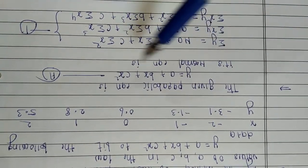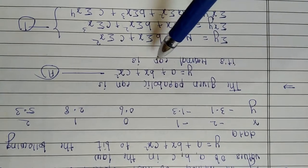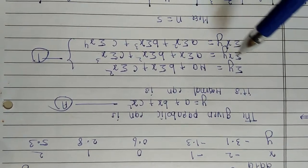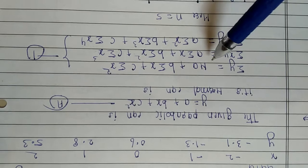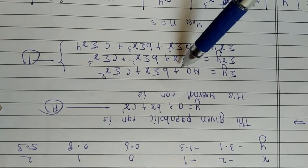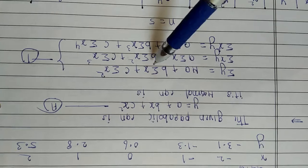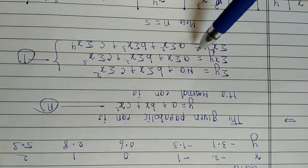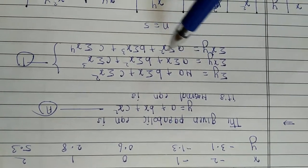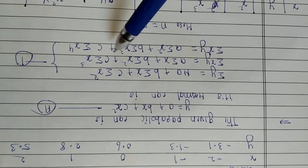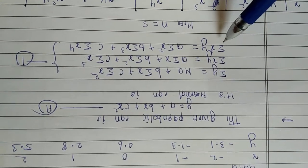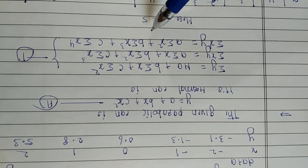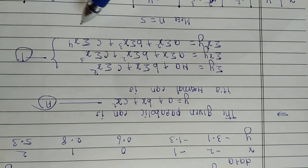The second degree parabolic equation is y = a + bx + cx². For this, the normal equations are: first, Σy = na + bΣx + cΣx²; second, Σxy = aΣx + bΣx² + cΣx³; third, Σx²y = aΣx² + bΣx³ + cΣx⁴.